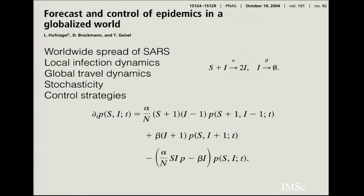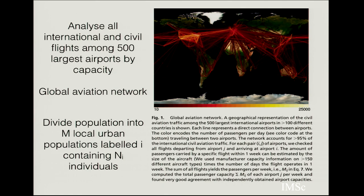The model also incorporates individuals who can travel long distances, giving long-range connections between different nodes. It introduces stochasticity by solving the master equation — equations describing how the probability of having S susceptible and I infected individuals changes as a function of time t. The probability changes because infected people influence susceptible people proportionally to both the number of susceptibles and the number of infected. These are equations like those discussed in the context of the Gillespie model.